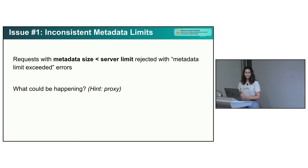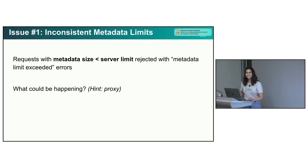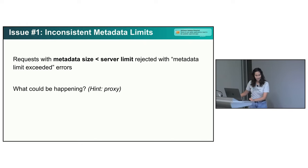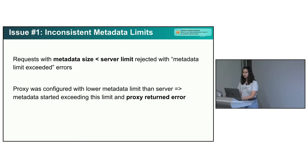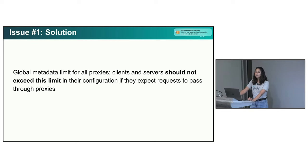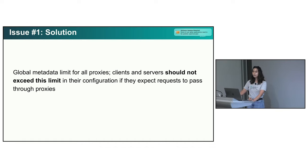An audience member correctly identified that there was a proxy with a different metadata size limit. That is what happened — we did have a proxy configured with a lower metadata limit than the server, so the request was not even reaching the server; it was getting rejected by the proxy. This can also happen if a proxy adds more metadata to a request and the request then gets rejected by the server because it now exceeds the server limit. Our solution was to introduce a global metadata limit for all proxies, so clients and servers could configure their own limits to ensure requests will successfully pass through any proxies.